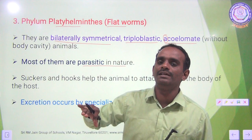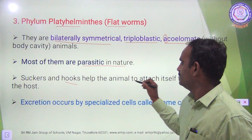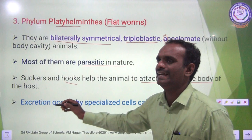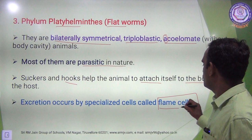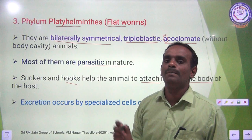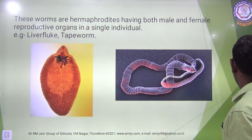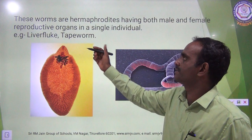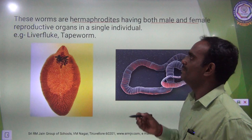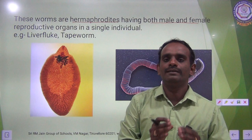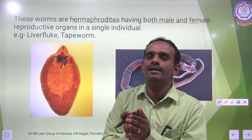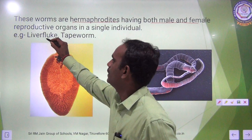Suckers and hooks help the animal attach itself to the body of the host. Excretion occurs by specialized cells called flame cells. These flatworms — Platyhelminthes — are hermaphrodites, having both male and female reproductive organs in a single individual. Both the male organ and female organ are present in a single individual. Examples are liver fluke and tapeworm.